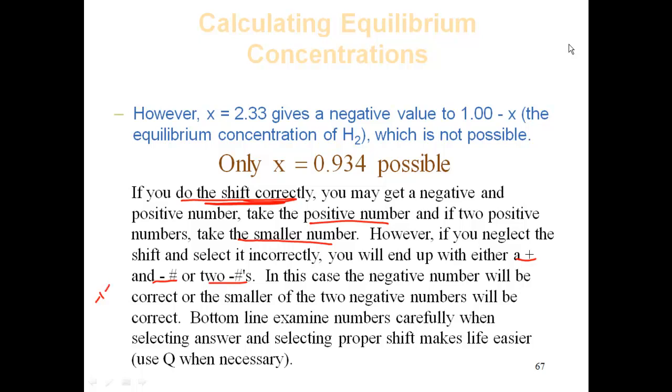When I say two negative numbers, say negative 1 and negative 2. Negative 1 is the smaller one. That's the one closer to 0. It's going to be the smaller one of the two negative numbers. So bottom line is you want to carefully select the answer, and it helps if you do the shift correctly.